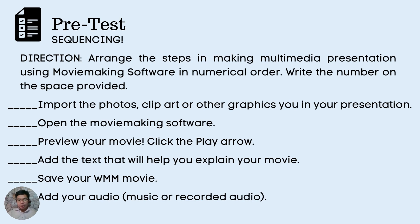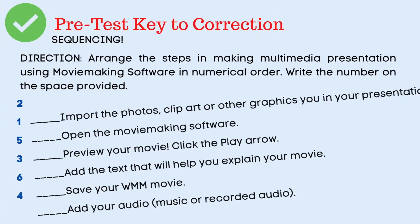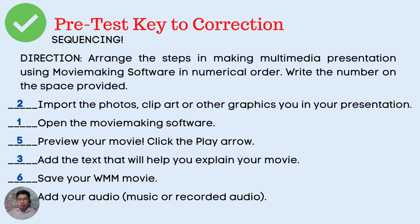Are you done? Let us check your work. Here is the key to correction. The first step is open the movie making software. It is followed by importing the photos, clip art, and other graphics you need in your presentation. Three, add the text that will help you explain your movie. Four, add your audio, music, or recorded audio. Five, preview your movie — click the play arrow. And the last step is save your WMM movie.